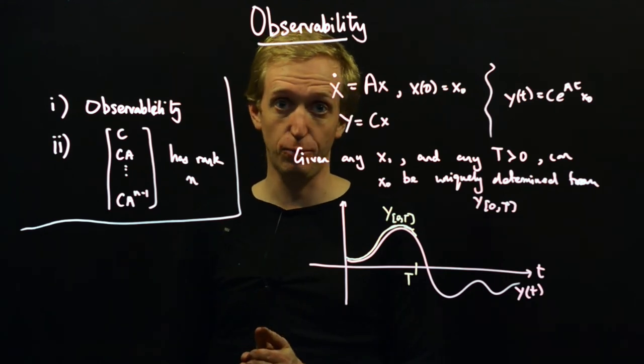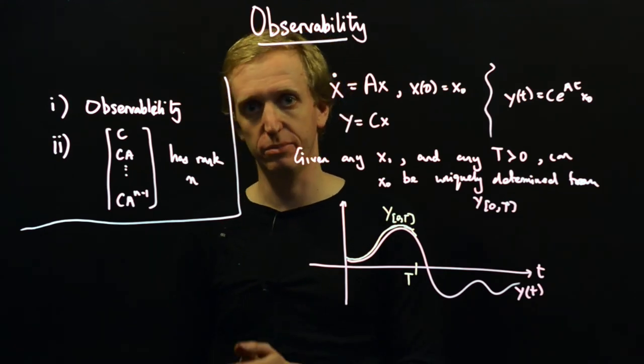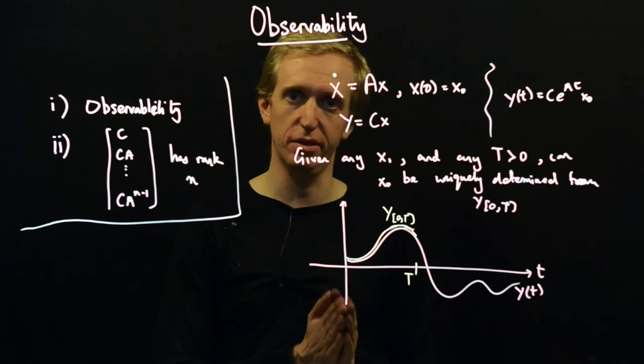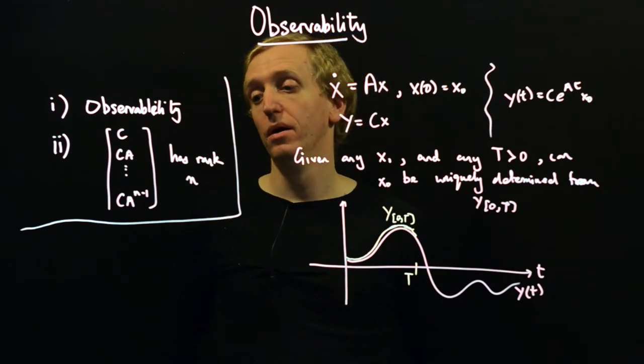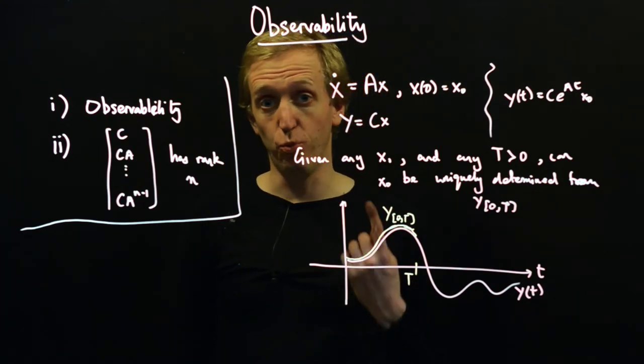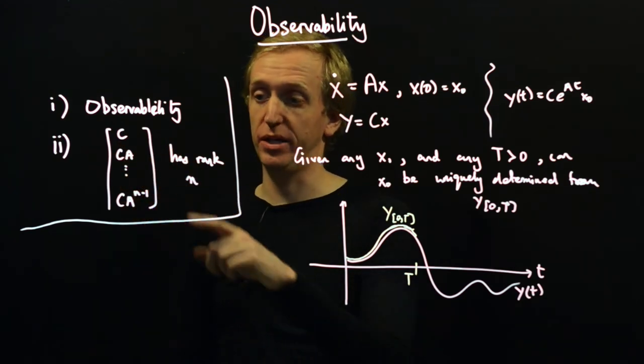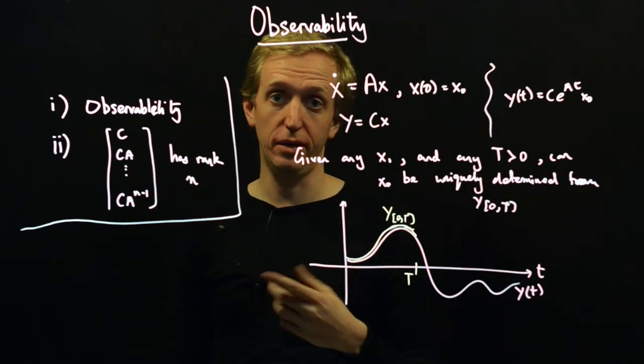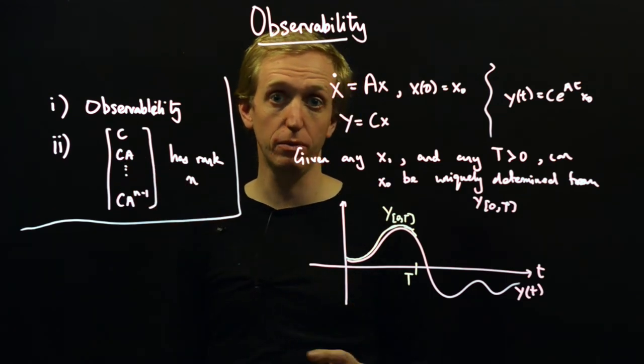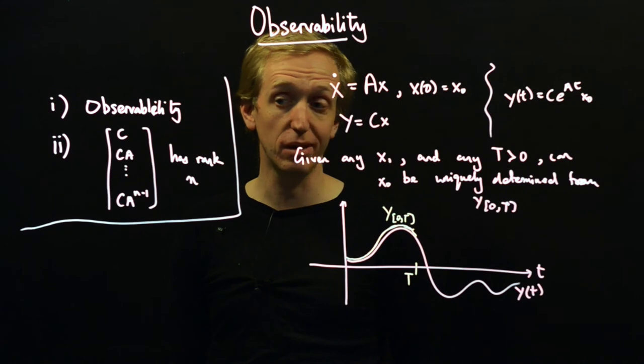So we build this observability matrix. And then the test for observability is: does this matrix have full rank? If it does, the system is observable. If it does not, the system is not observable. And again, if you have just one output, this matrix will be square. In which case it has full rank if and only if it's invertible or if it has non-zero determinant.